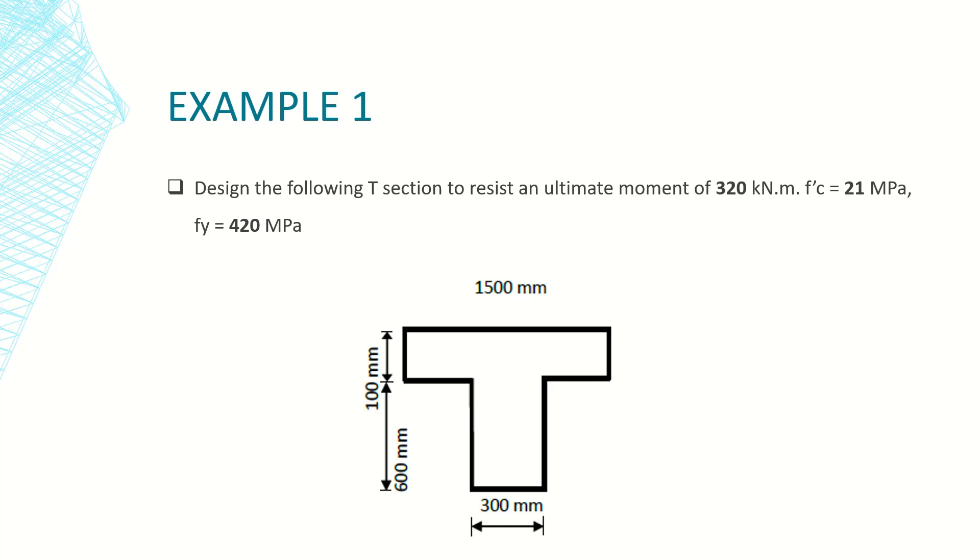resist an ultimate moment of 320 kilonewton meters. The material properties are: compressive strength of concrete f'c equals 21 MPa and the yield strength of steel rebars fy equals 420 MPa.